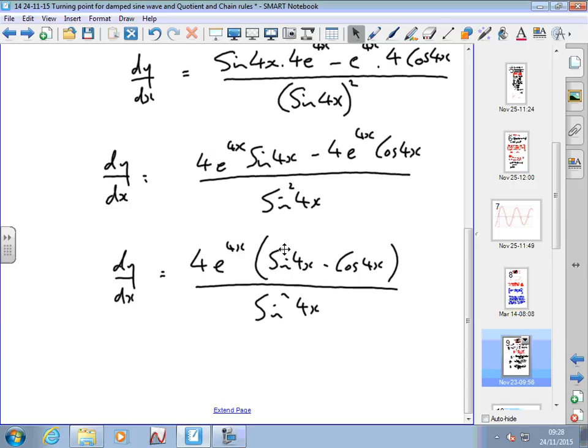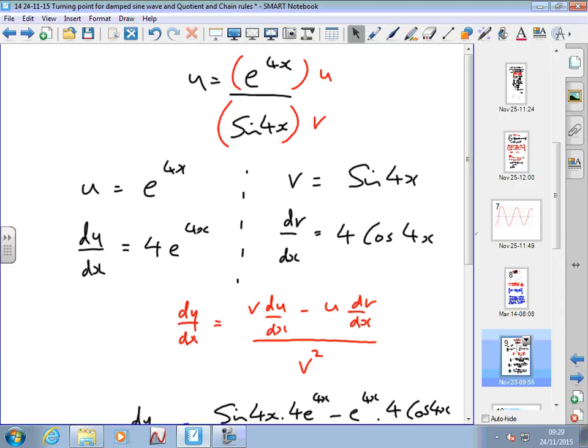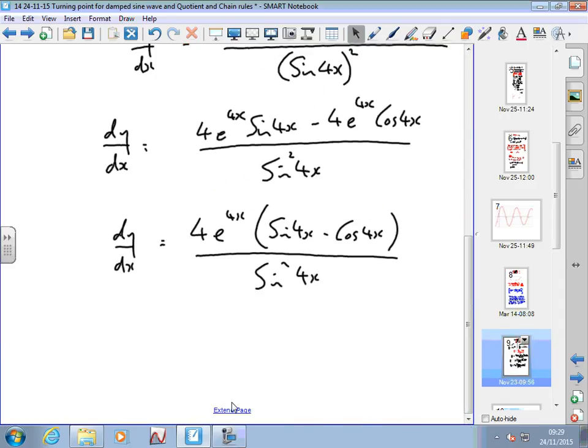Now, if I was asked to find the turning point where the gradient drops to 0—and if we look back at our original function, we can see it drops to 0 around the 0.2 mark—I could find that by letting this equal 0. I can multiply and divide by anything I like, so if I divide both sides by 4 e to the 4x, that would go, and all I'd be left with is sine 4x minus cos 4x equals 0. The problem would be much easier. So the fact that this sometimes equals 0 to find the turning point is really handy if you factorise.